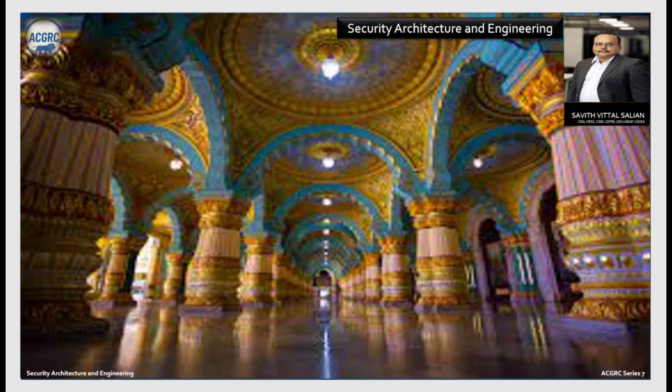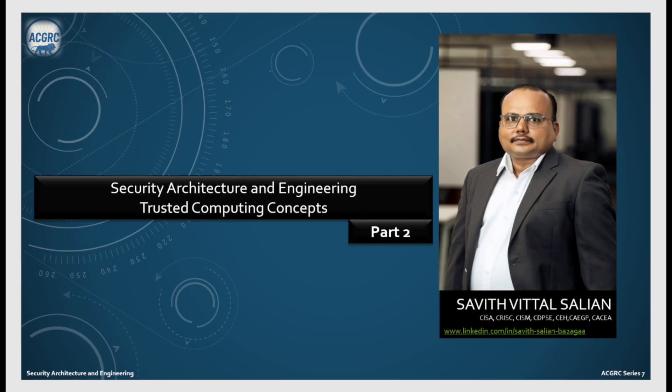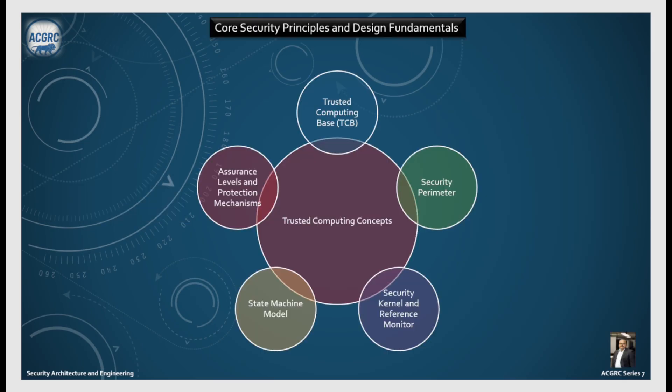Security Architecture and Engineering, Part 2: Trusted Computing Concepts. Trusted Computing Concepts have five distinct areas: Trusted Computing Base (TCB), Security Perimeter, Security Kernel and Reference Monitor, State Machine Model, and Assurance Levels and Protection Mechanisms.